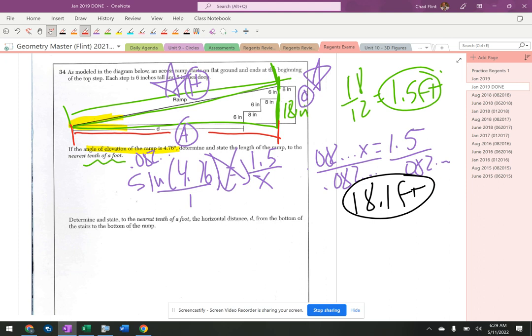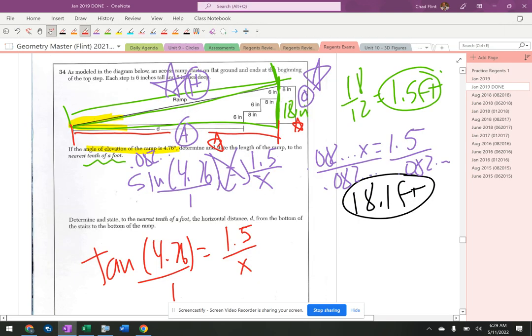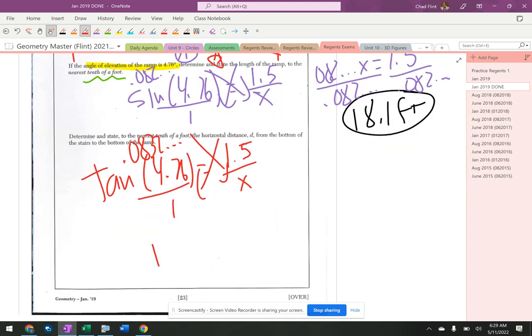Alright, so that means I now need the adjacent and I have the opposite. So let's do cosine 4.76 equals adjacent which is X. Actually hang on, I don't want cosine. I want to do opposite and adjacent, so let's do tangent. I could have done cosine and used my 18.1. So tangent is opposite 1.5 over adjacent X. So tangent 4.76 is 0.0832. Same deal, I get a very similar number: 1.5 equals 0.0832X.